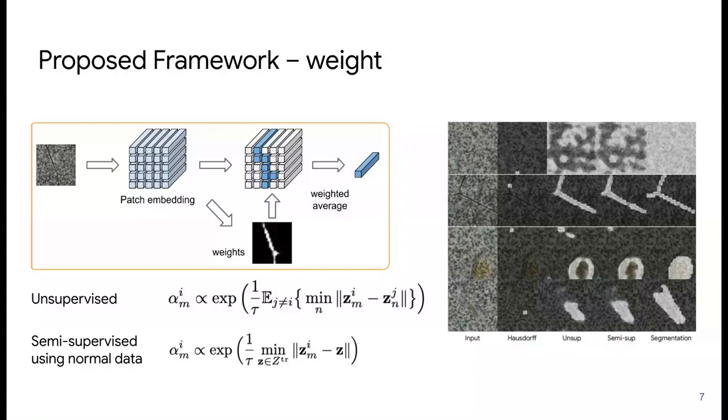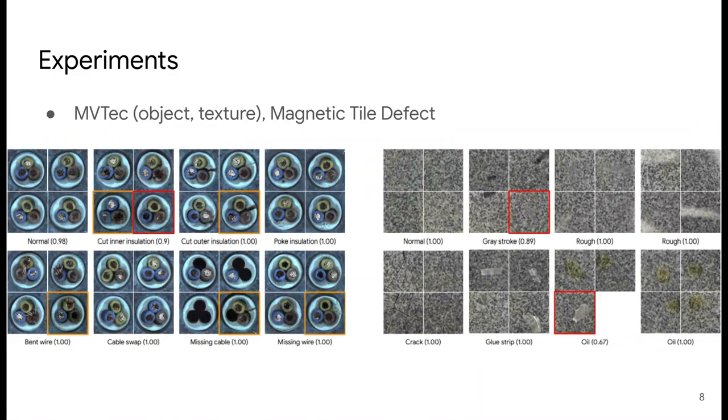We evaluate our method on MVTEC and magnetic tile defect datasets. We first show some qualitative results that show images in each cluster returned by our proposed method. As we see, our method returns clusters composed of images of similar types of defects.